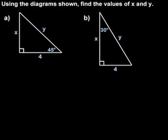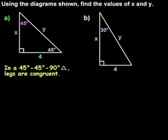In this example, we're asked to use the diagrams shown to find the values of x and y. In part a, we have a 45-45-90 degree triangle, and we're given that the length of one of the legs is 4. To find the value of x, remember that in a 45-45-90 degree triangle, the legs are congruent, so x must equal 4.